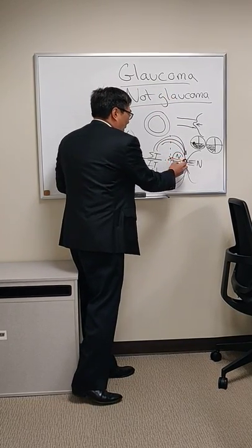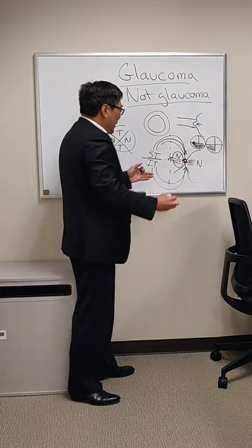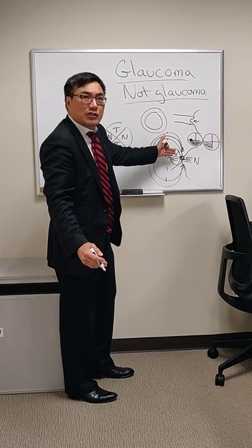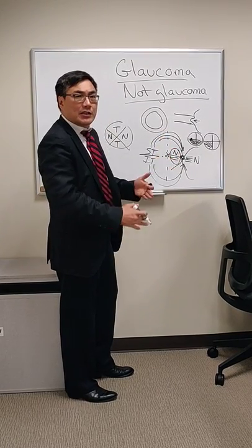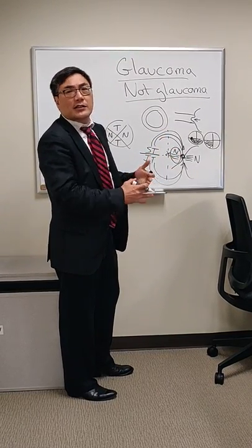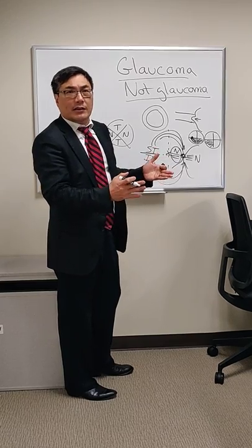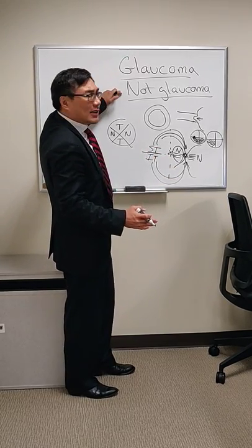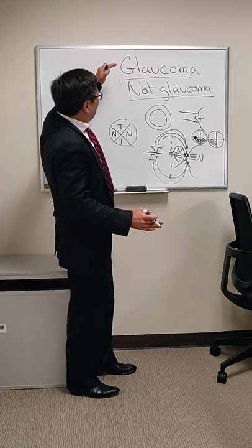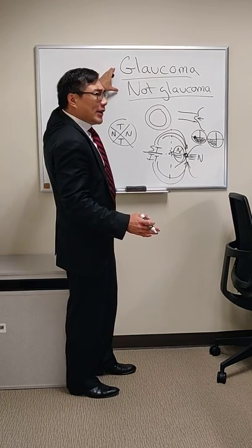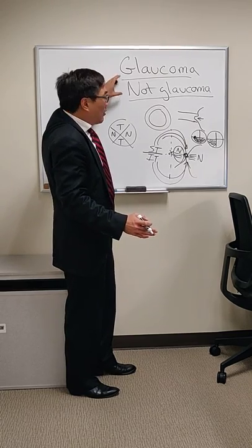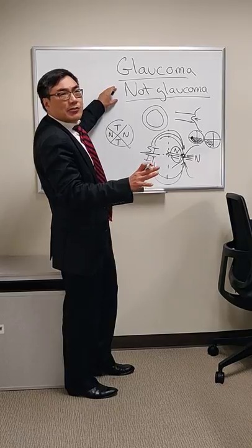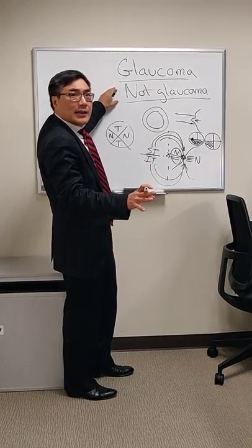Because the papillomacular bundle is relatively short and straight to the disc, it is usually preserved, meaning visual acuity is normally maintained until very late in glaucoma. This is an important distinction when we consider non-glaucomatous cupping.